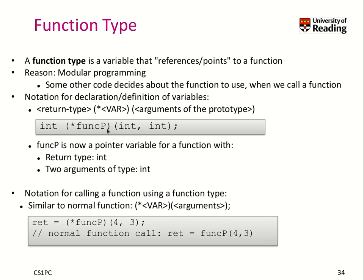Here's an example. We have a func_p, which stands short for function pointer variable. We have to specify a star here, and we have to add it in brackets. This means func_p is a variable that stores a function that takes two arguments of type integer and returns an integer. To call a function using such a function pointer, we put the variable with a star in front in brackets, and then we put down the arguments — compared to a normal function call like func_p(4, 3), here we need the brackets and the star.